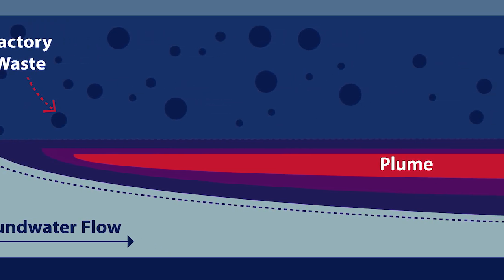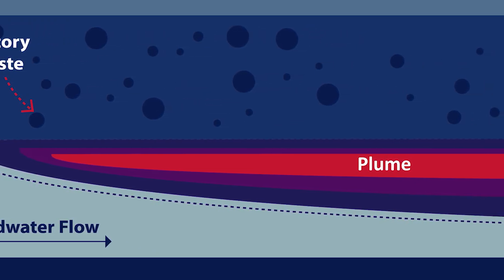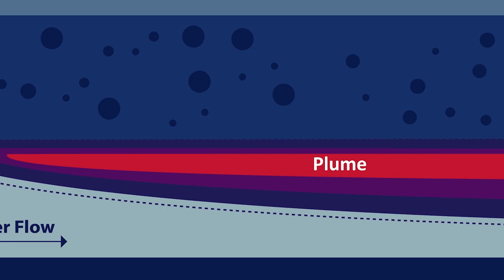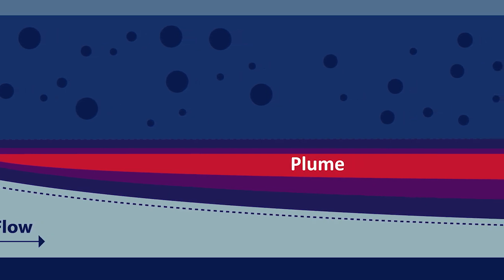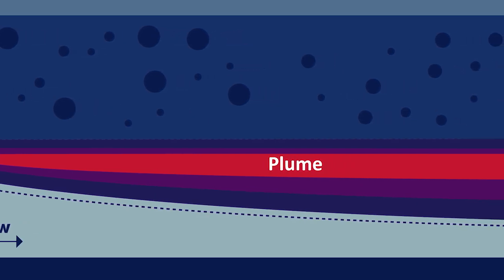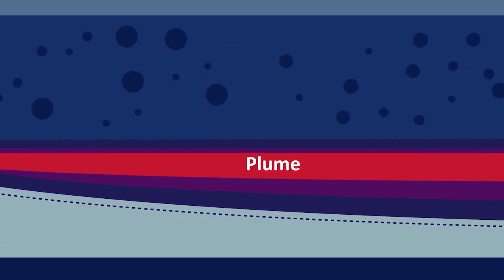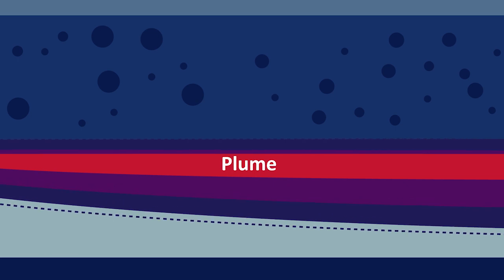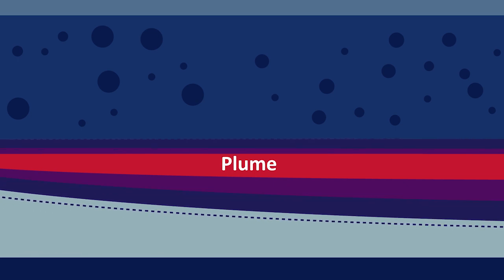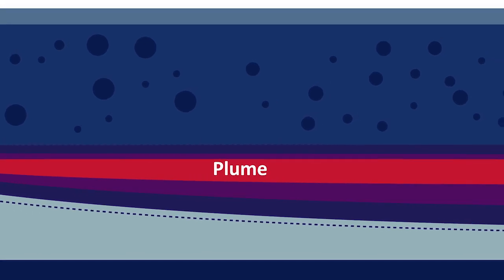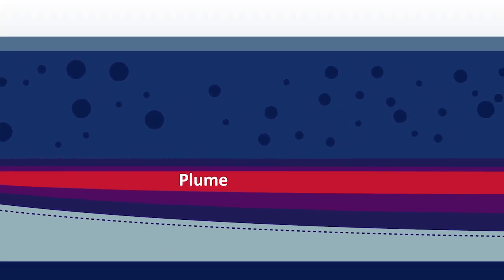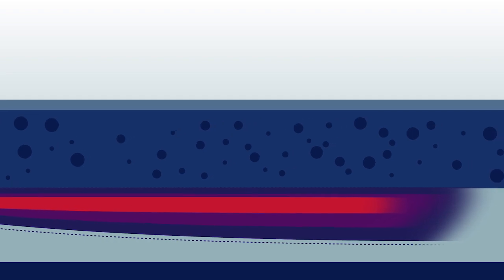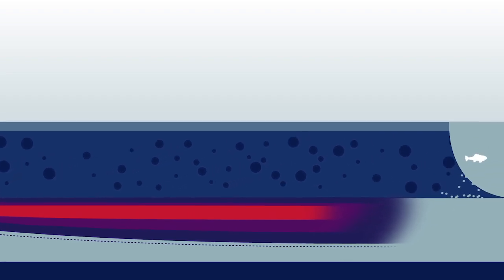The amount of PFAS at any given point in a plume can vary as the groundwater moves along. Here we see the red section of the plume showing higher amounts of PFAS and the purple section showing lower amounts. This is one reason for potential differences between test results.